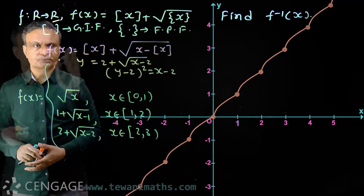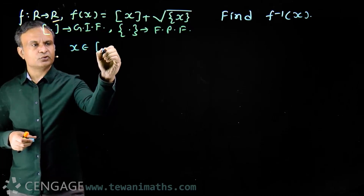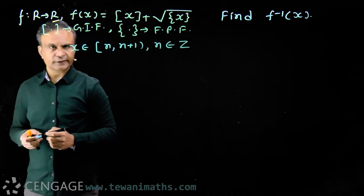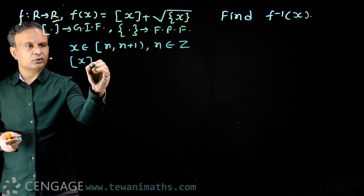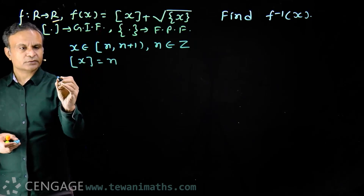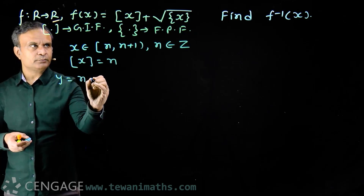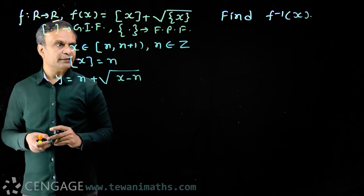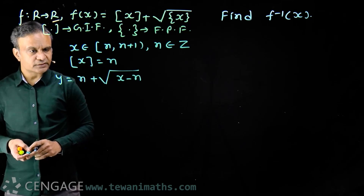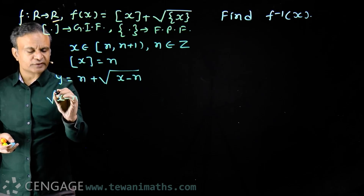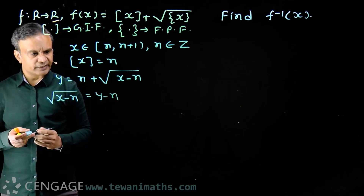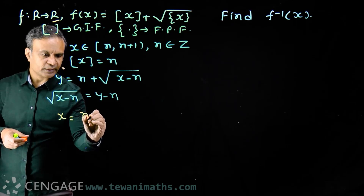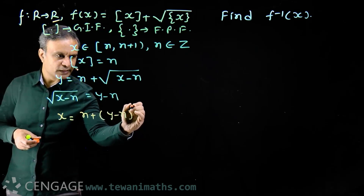Now let us find f⁻¹(x). Suppose x belongs to the closed interval [n, n+1], where n is an integer. Then ⌊x⌋ = n, and we have y = n + √(x − n). To express x in terms of y: √(x − n) = y − n. Squaring both sides and rearranging gives x = n + (y − n)².